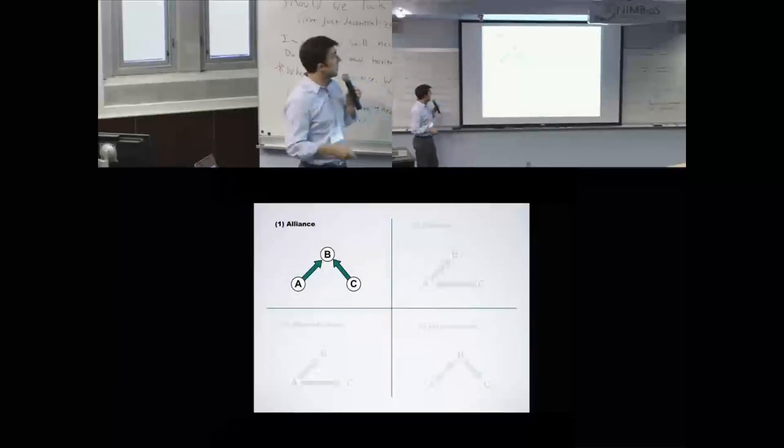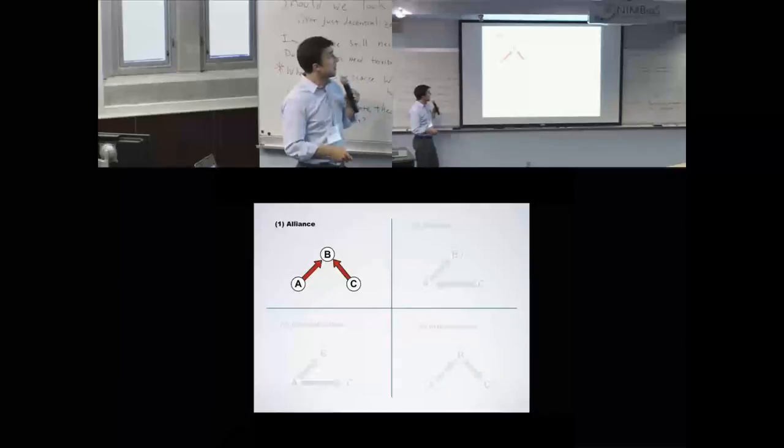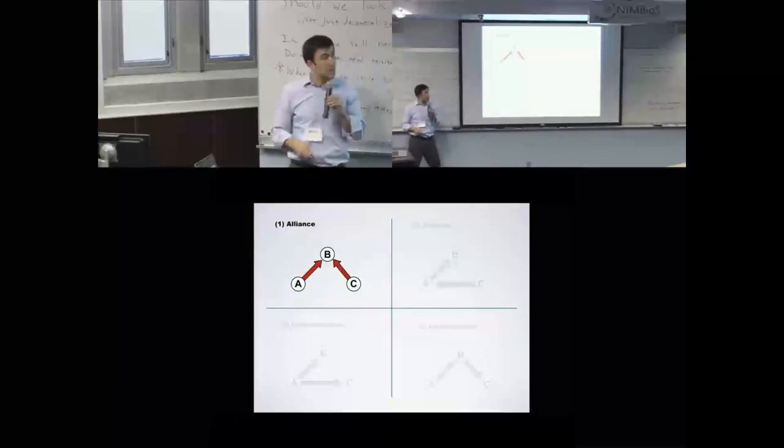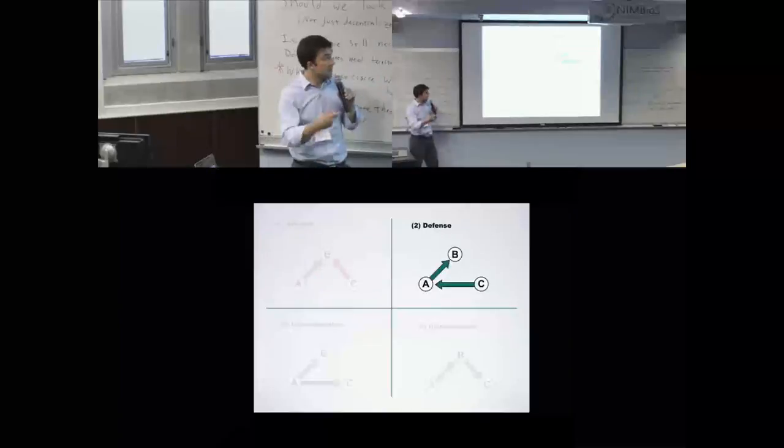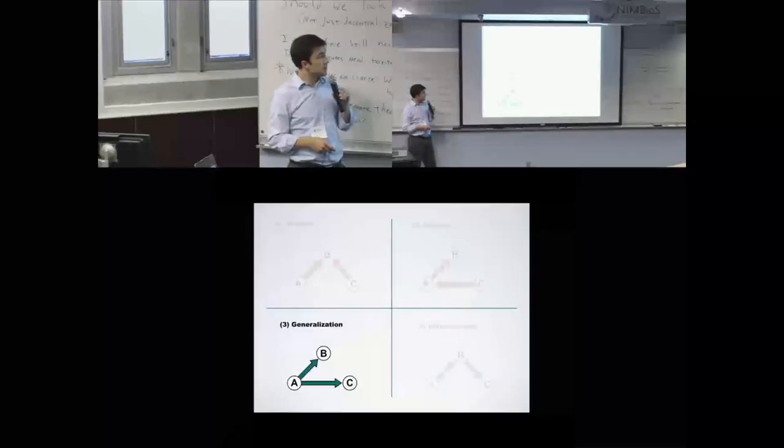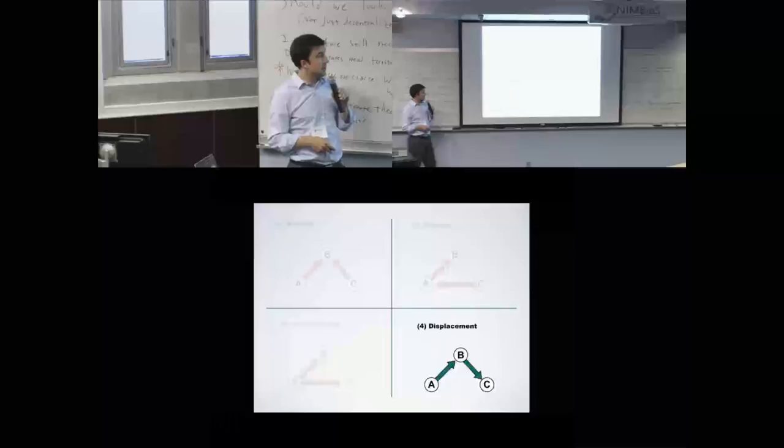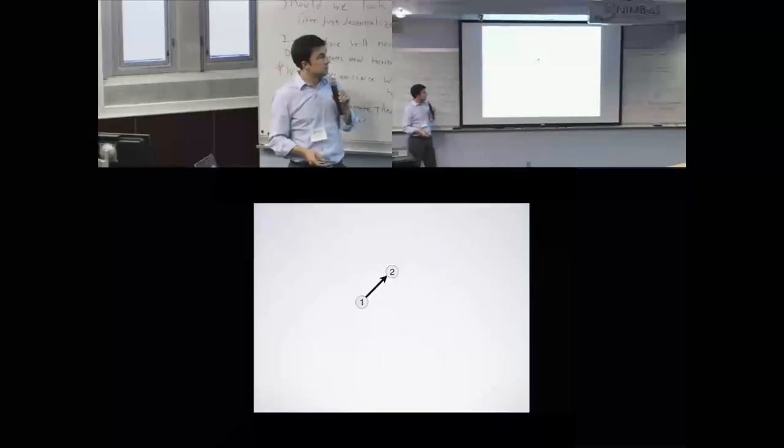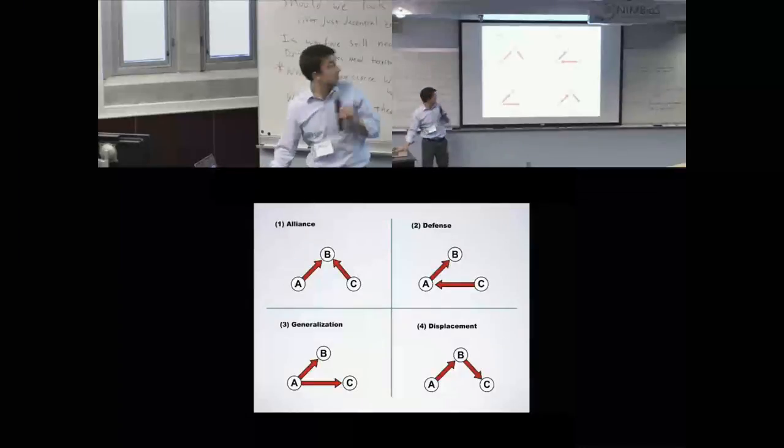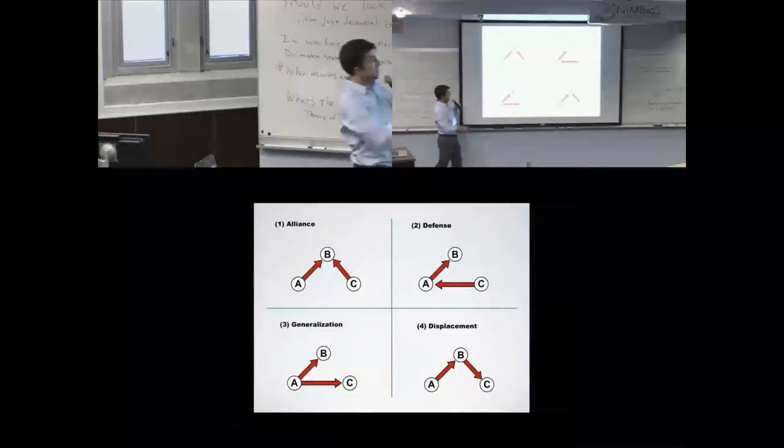Just really quickly: alliance first. A attacks B—arrow denotes cost imposition or attack, you can use the two interchangeably—so A attacks B and then C subsequently attacks B. That's an alliance of A and C against B. Defense: again, A attacks B, but now C defends B against A. Generalization: A attacks B and then A attacks C. And displacement: A attacks B and then B attacks C.